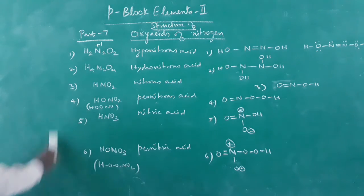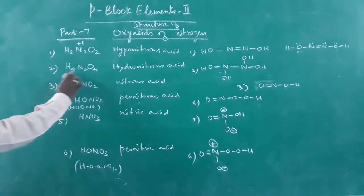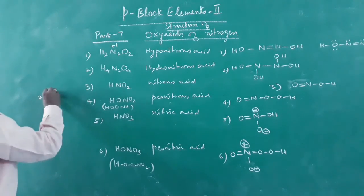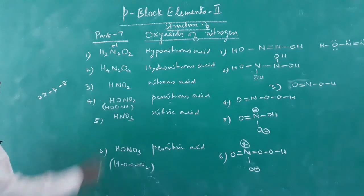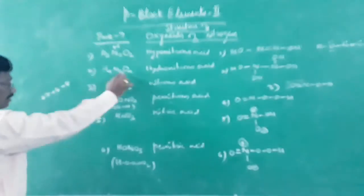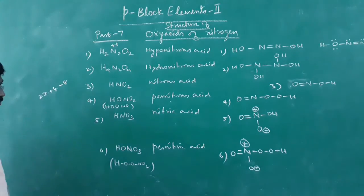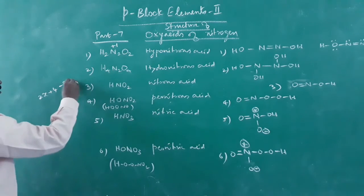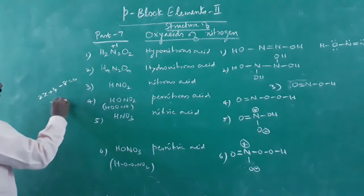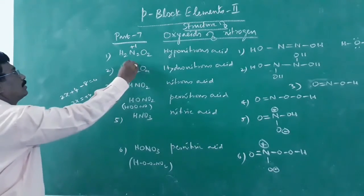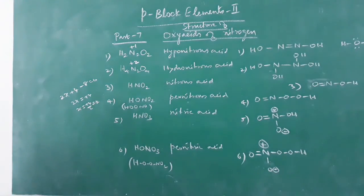For hydronitrous acid H4N2O4: 4(+1) + 2x + 4(−2) = 0, so 2x + 4 − 8 = 0, giving 2x = +4, x = +2. The oxidation state of nitrogen in hydronitrous acid is +2.